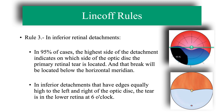Rule number 3 is useful in inferior retinal detachment. It says that in 95% of cases, the highest side of the detachment will indicate which side of the optic disc the primary retinal tear is on, and that tear will be located below the horizontal meridian. In those inferior detachments that have edges equally high on both sides of the optic disc, the tear is in the lower retina at 6 o'clock.